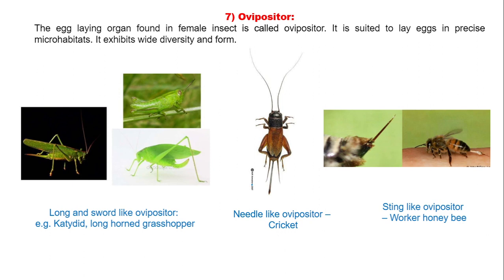The ovipositor: the egg-laying organ found in the female insect is known as the ovipositor. Ovipositors are suited to lay eggs in precise microhabitats and exhibit wide diversity in form. The ovipositor is long and sword-like in katydids, needle-like in crickets, and sting-like in worker honeybees.